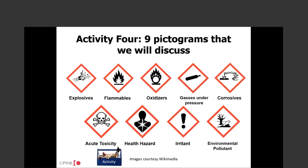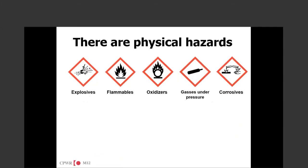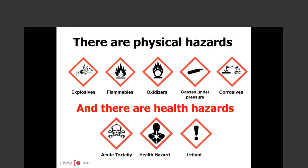The ninth pictogram is the only one of the nine that is non-mandatory — a manufacturer could put this symbol on if they wanted to, but it is not mandatory. This is the environmental pollutant pictogram — an identifier that this chemical or product could damage our environment. Of the nine different pictograms, five are physical hazards: explosives, flammable, oxidizers, gas under pressure, and corrosives. The other three are health hazards: acute toxicity, the high health hazard, and the irritant.